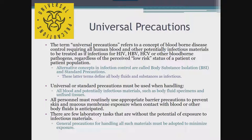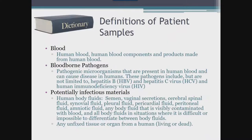You may also hear the terms body substance isolation or standard precautions. These terms define all body fluids and substances as infectious. This makes sense — in our world of safety, you never really know the infectious status of a patient. When you treat every patient as infectious, you have reduced your risk of exposure by handling every specimen with the appropriate protective equipment and engineering controls. Universal precautions, body substance isolation, and standard precautions refer to many terms within their definitions that we need to define so we are consistent in how we apply these processes.